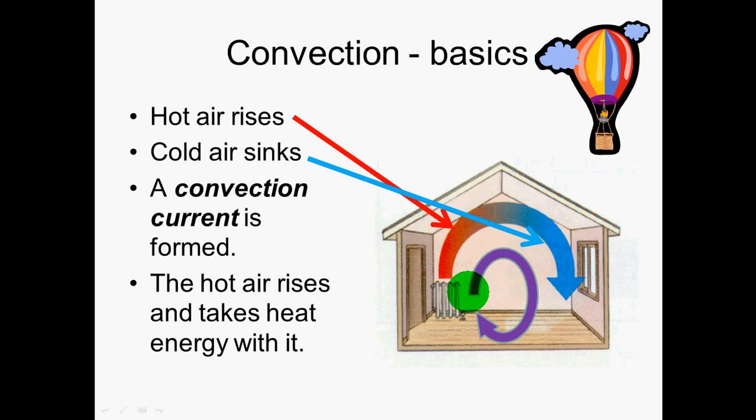Hot air rises. Warmed up by the heater, it rises up to the top. It might cool down and sink back down again. It'll get in contact with the heater and it gets heated up again. So you have a convection current which takes the heat energy from the cold bottom to the top. The hot air rises and takes heat energy with it.